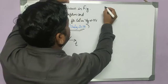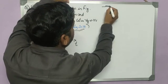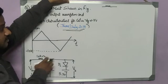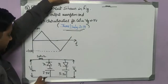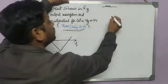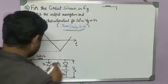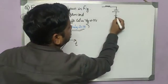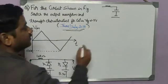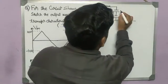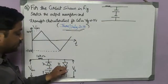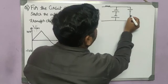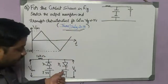Let me draw the equivalent circuit. In that equivalent circuit, we will replace each diode with its equivalent value. Since the diode has a cutting voltage of 0.7, we can replace this diode with a battery of 0.7 volt. The cathode is the negative terminal and the anode is the positive terminal. Similarly, the next diode is replaced: anode becomes positive, cathode becomes negative, and this battery value is kept as given.